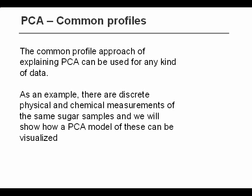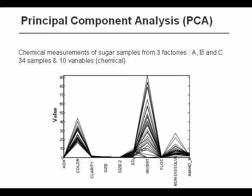But just as an example, we will show a discrete data set that also pertains to the same sugar samples. In this case, instead of the spectra, we will use lab measurements that were made on these very same samples. We have 10 different chemical variables, chemical and physical variables like color, ash content, size, etc.